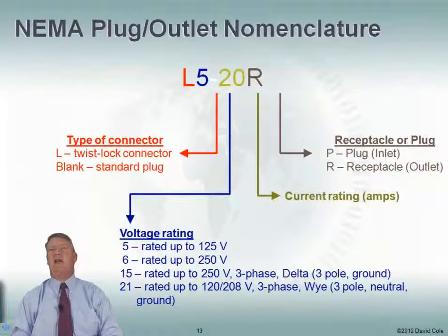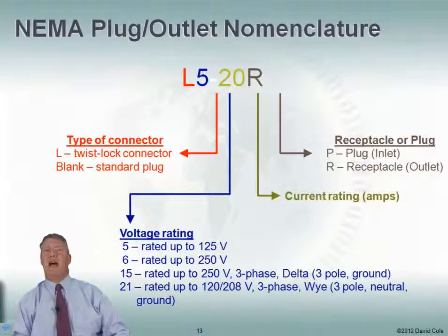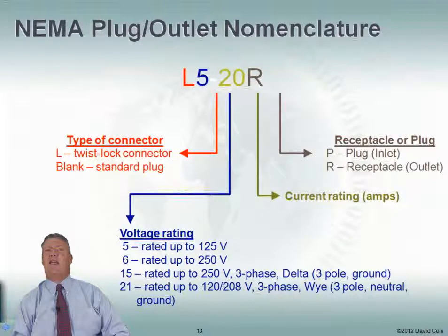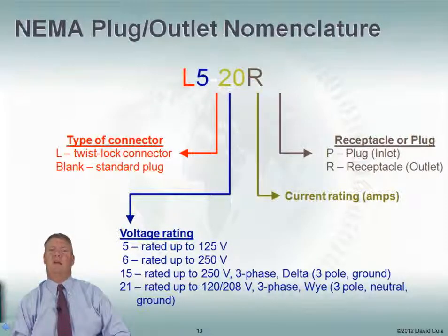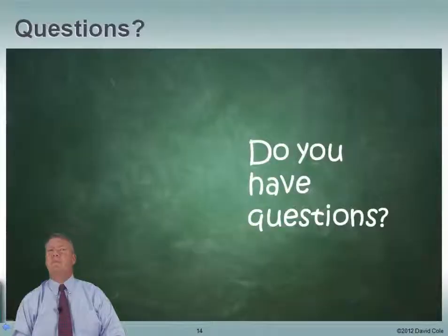The NEMA plug outlet nomenclature is really more for reference. When buying plugs or outlets, this is how NEMA defines them. The first character — either an L or blank — indicates connector type: L means twist-lock, blank means standard plug. The number 5 is the voltage rating, meaning rated up to 125 volts. The 20 is the current rating, so it can support 20 amps. Finally, R means it's a receptacle or outlet, and P means it's a plug.